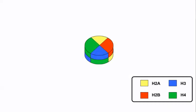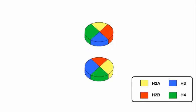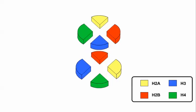Eight histones, two each of histone proteins H2A, H2B, H3, and H4 form the protein core of the nucleosome.